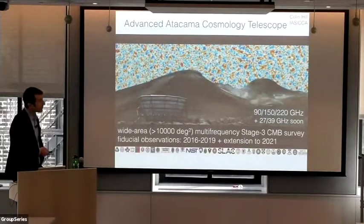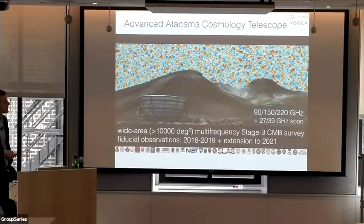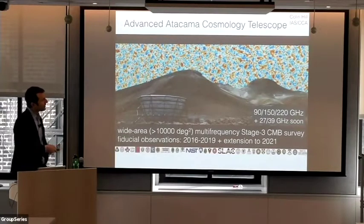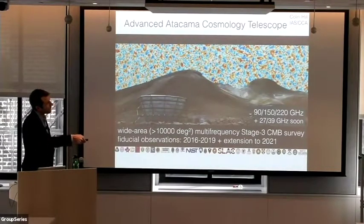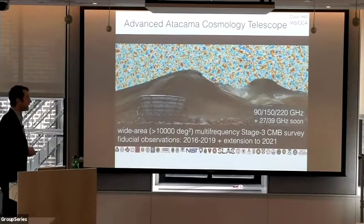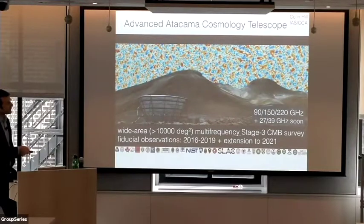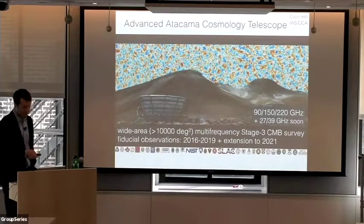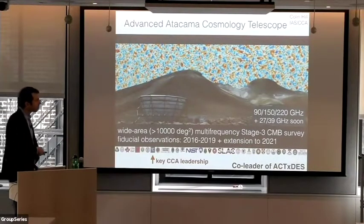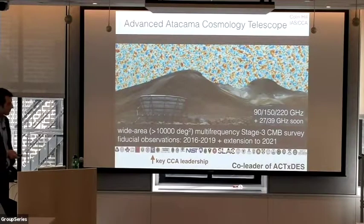What are the datasets we're going to use? First, the Advanced Atacama Cosmology Telescope, located on Cerro Toco in the Atacama Desert in Chile — we build experiments there because the sky is superb for CMB work. This is a wide-area survey covering almost 20,000 square degrees — about half the sky — with multi-frequency coverage. We've observed three frequencies for several years and are putting a low-frequency receiver on the telescope soon for more leverage over foregrounds. We've recently obtained an extension for this survey to 2021, around when SO will start. I'm currently co-leading all joint analyses between ACT and the Dark Energy Survey.